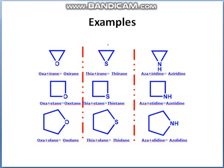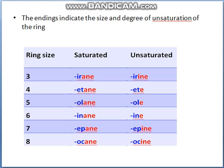Each suffix contains a ring size root and an ending intended to designate the degree of unsaturation in the ring. It is important to recognize that the saturated suffix applies only to completely saturated ring systems, and the unsaturated suffix applies to rings incorporating the maximum number of non-cumulated double bonds. Systems having a lesser degree of unsaturation require appropriate prefixes such as dihydro or tetrahydro.